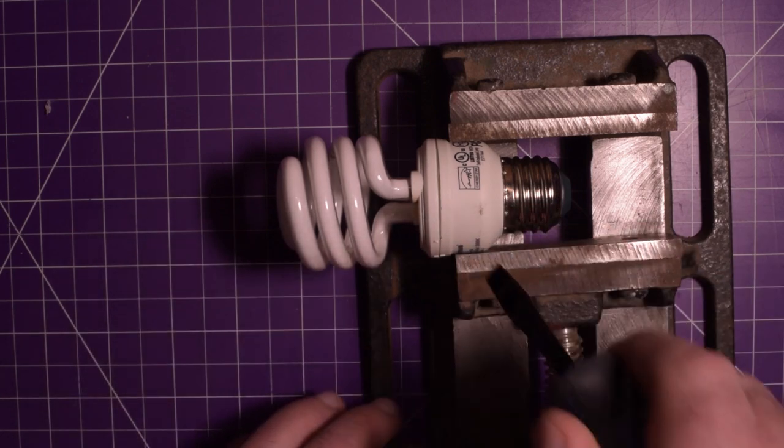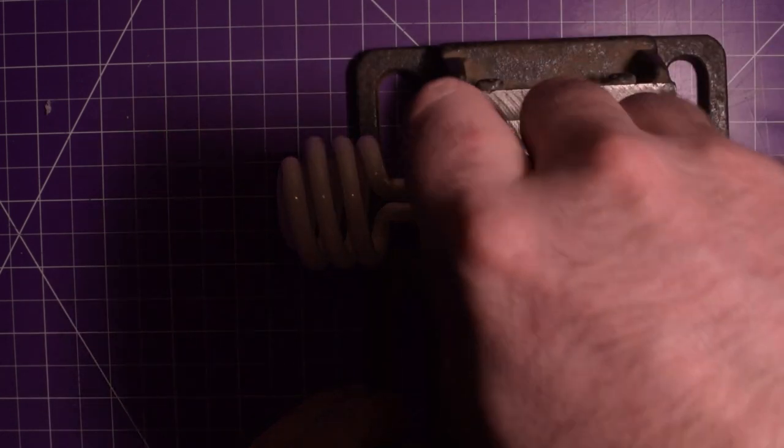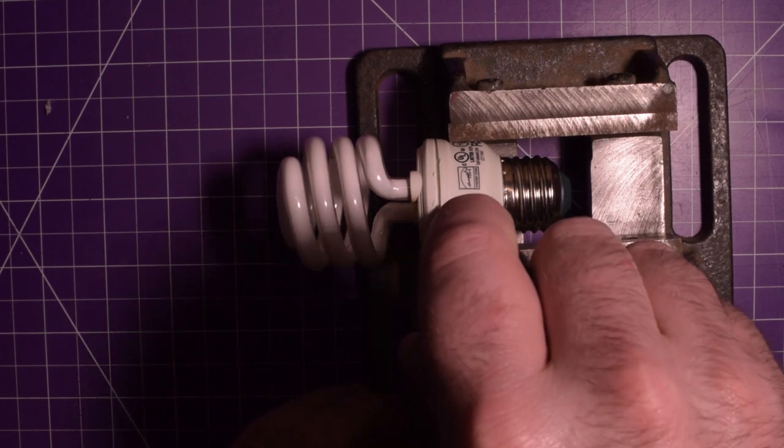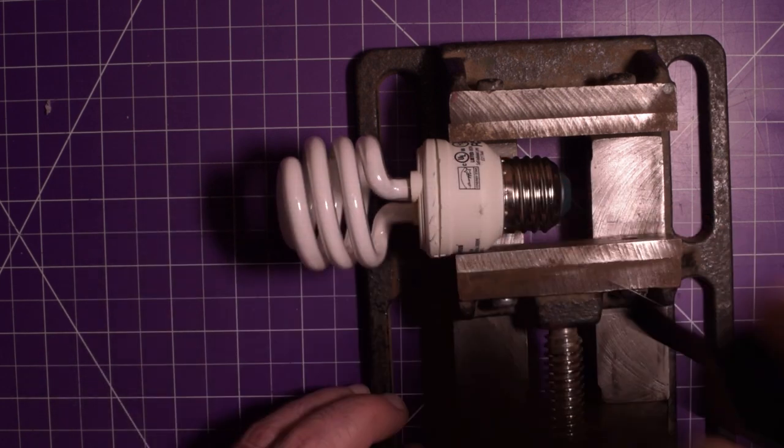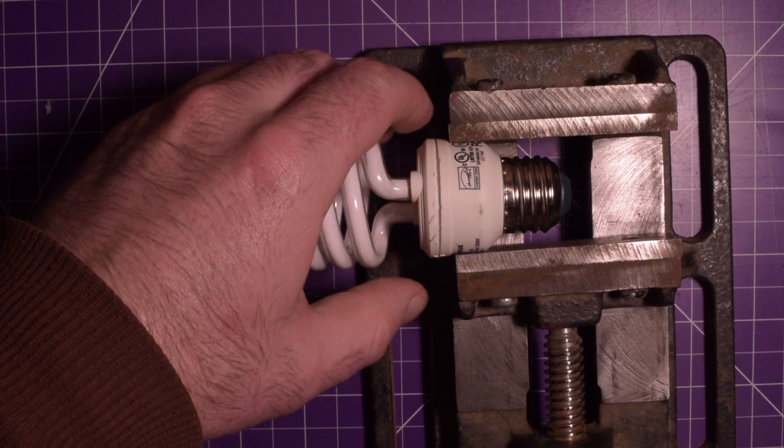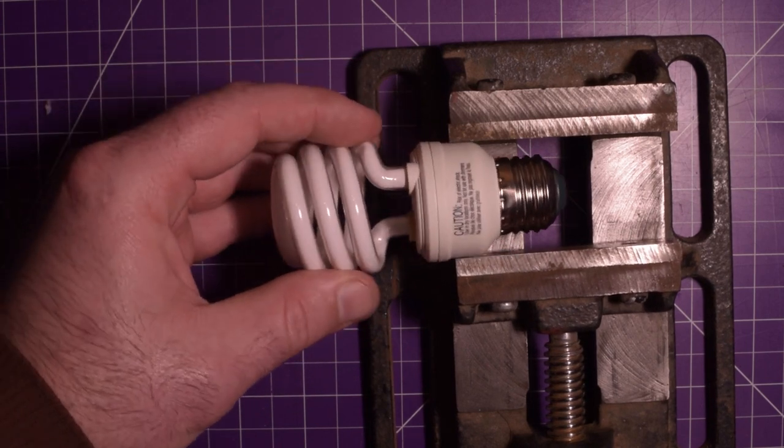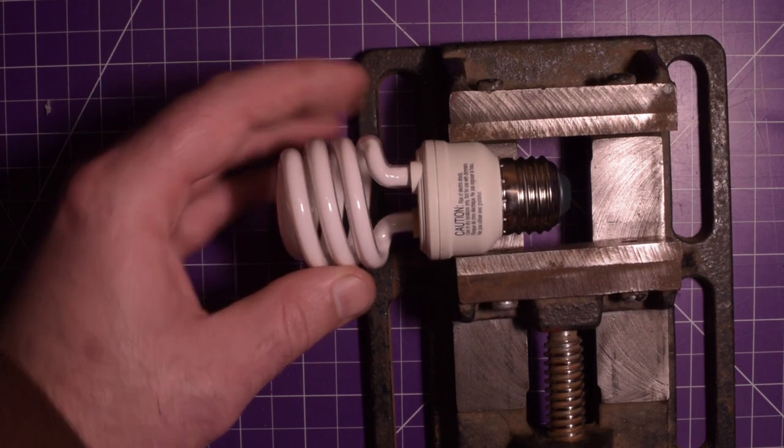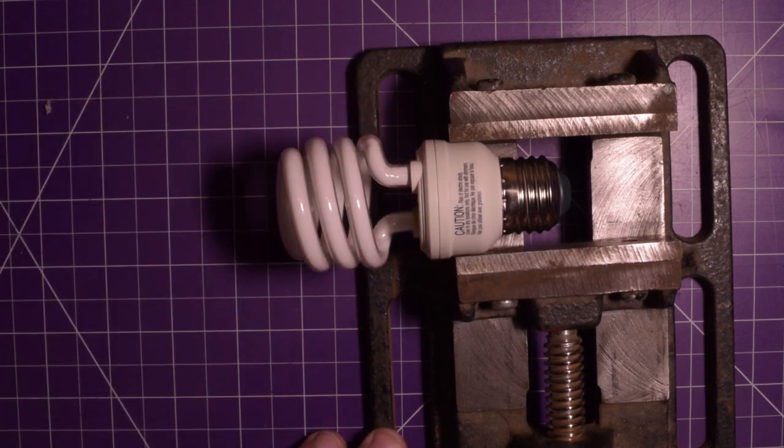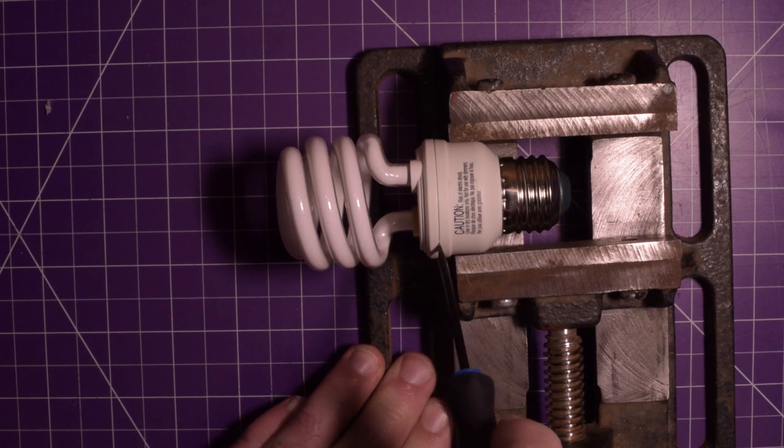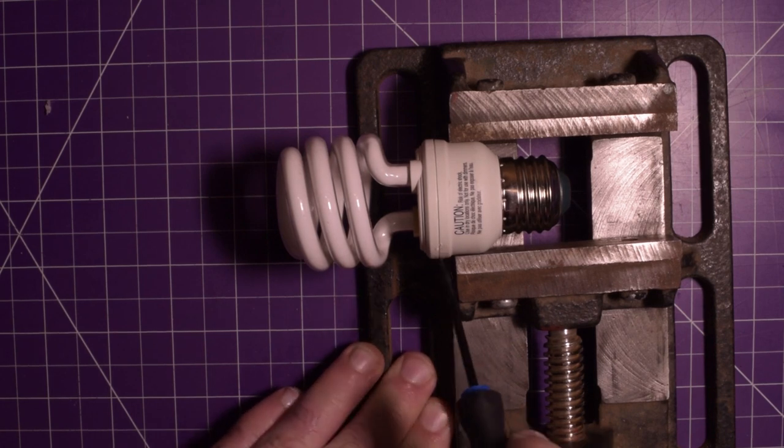So now you can take a bigger screwdriver, a thicker one, and just sort of work it around here. The problem is this plastic is extremely brittle. I'm going to release the vise. I'm going to try again here. So you just give it a little bit of pressure, and not too much because you will actually break the glass.